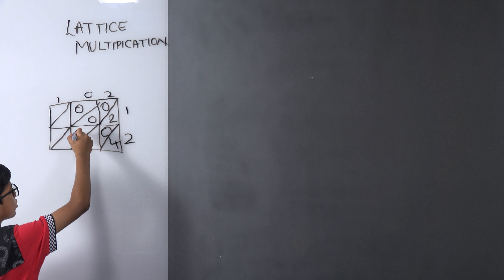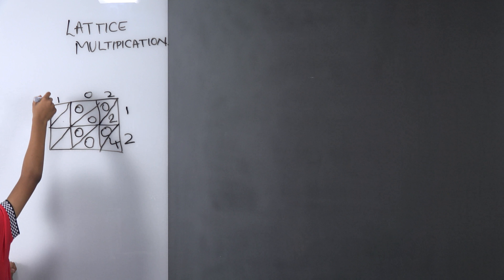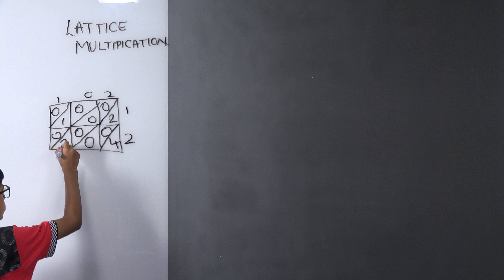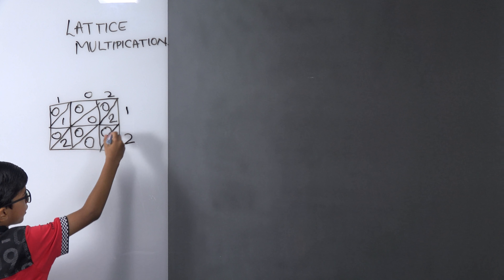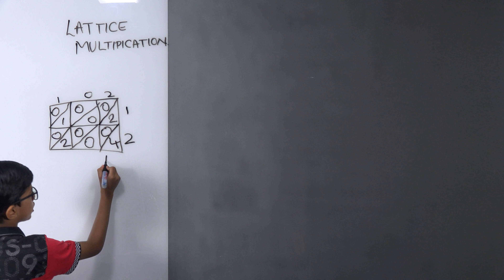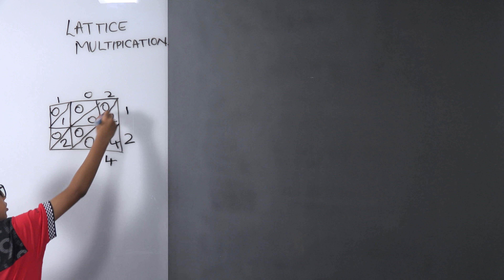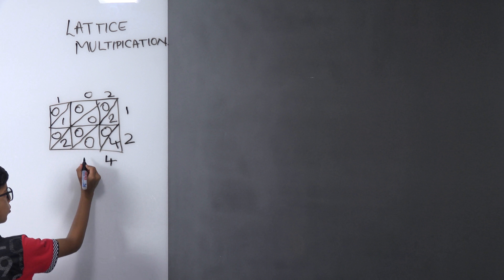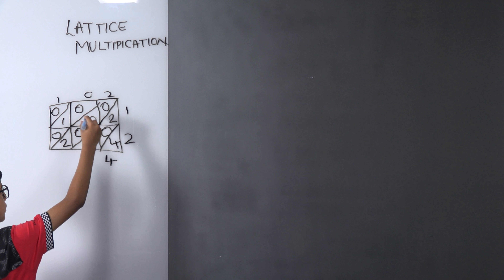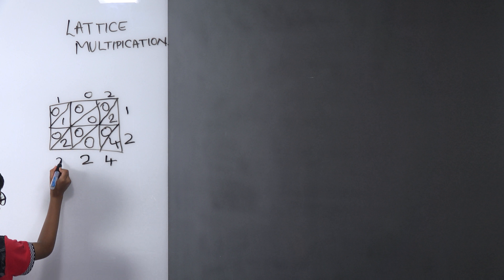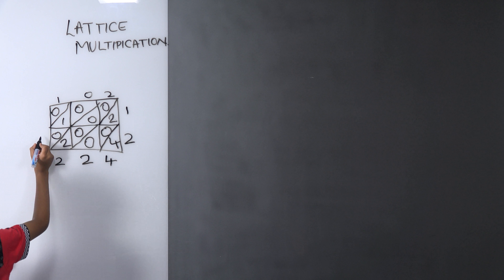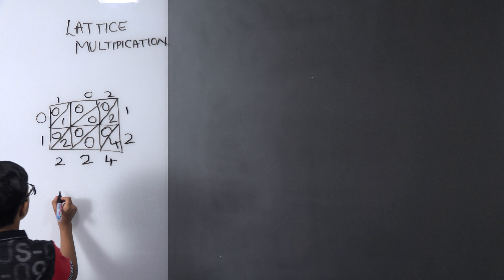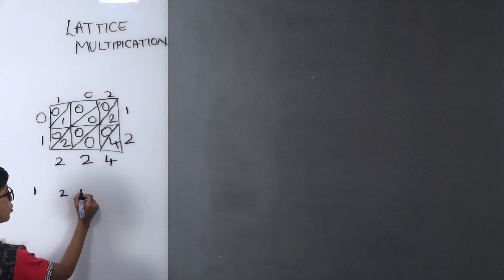Zero into two is also zero. One into one is one and one into two is two. Now add only this triangle — it gives four. Now add these lines: zero plus zero is zero, and zero plus two is two. Then zero plus zero plus zero plus two is equal to two. Zero plus zero plus one is equal to one, and one and zero will remain zero. So the answer would be 1, 2, 2, 4.